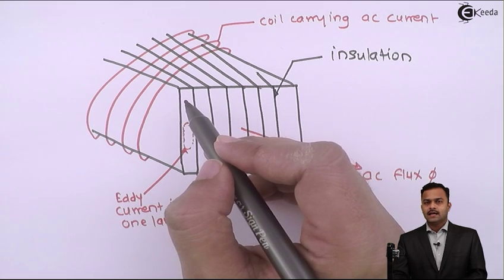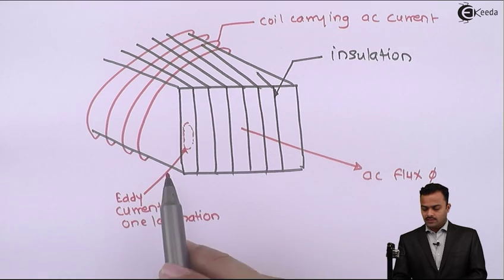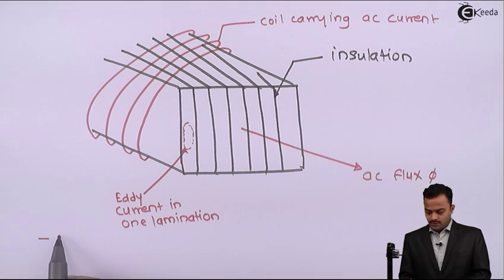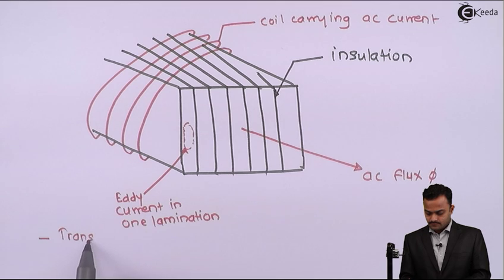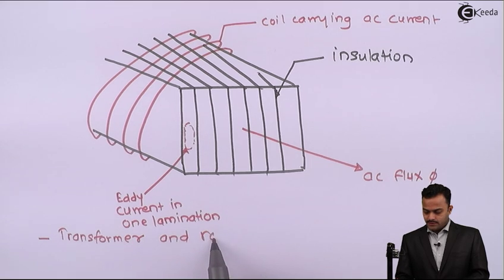Hence I can say if I have a number of sheets, which we also call as laminations, insulated from each other, so that eddy current losses can be reduced. Therefore, most of the time, transformer and rotating machine cores...